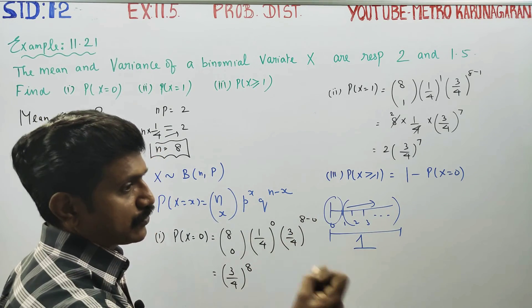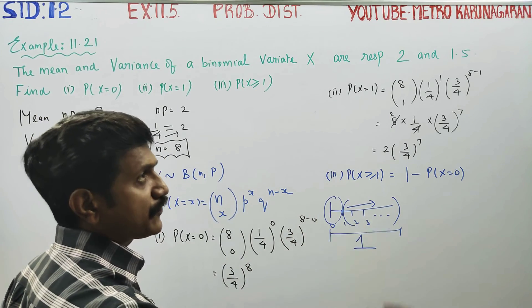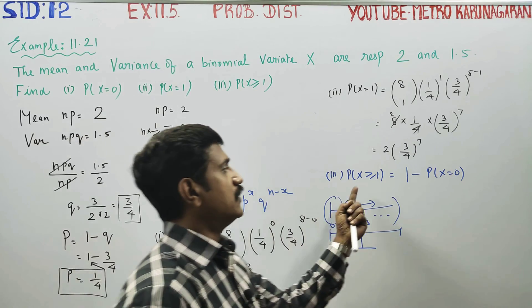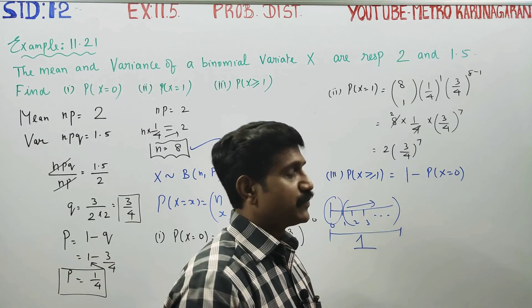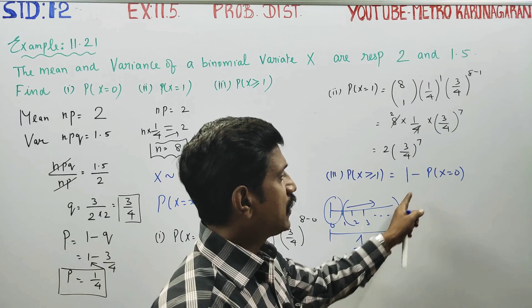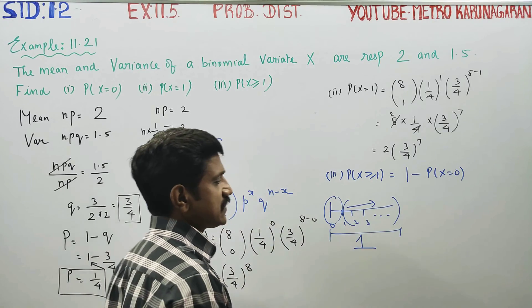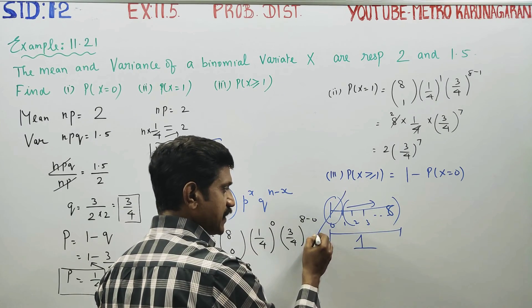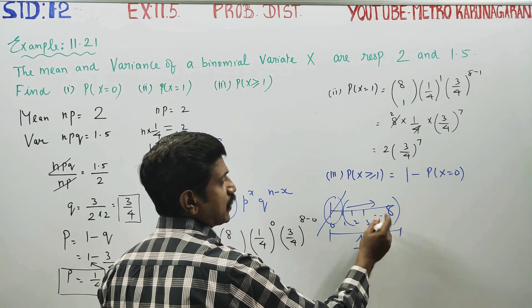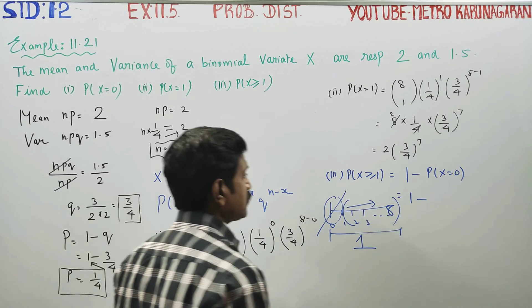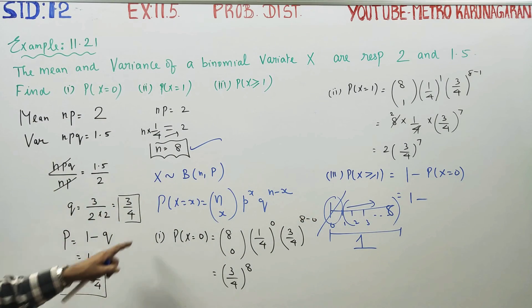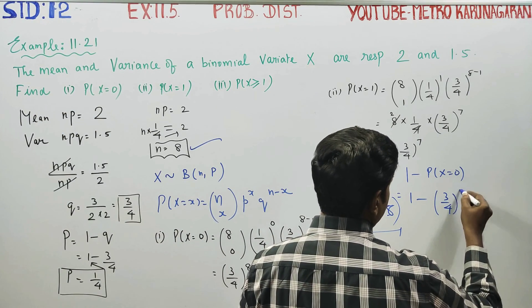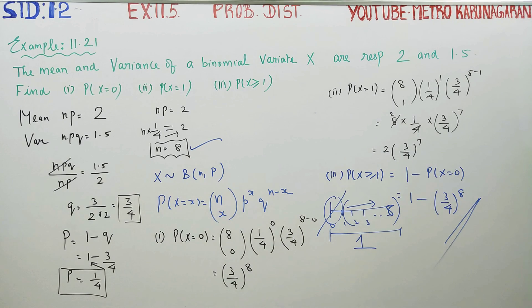So, 1 will give us 1, 2, 3, 4, 5, 6, 7, 8. Then, it's easy to use the complement. 1 minus, total probability is 1, 1 minus p of x is equal to 0. x is equal to 0 is already calculated, you can copy 3 by 4 whole power 8 will be our final answer. Thank you.